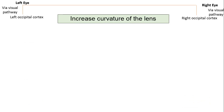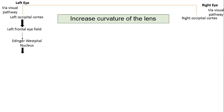The second change is the increase in the curvature of the lens. This again starts from the eye — the afferent impulses travel through the visual pathway from the retina to the visual cortex on both sides, then from the visual cortex to the frontal eye field, and impulses are relayed to the Edinger-Westphal nucleus. From there, efferent impulses travel along the third cranial nerve as preganglionic fibers to reach the ciliary ganglion, and postganglionic fibers pass via the short ciliary nerves to supply the ciliary muscle, causing its contraction.